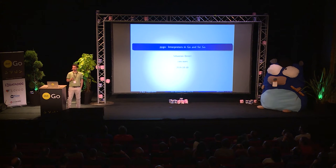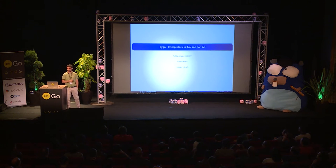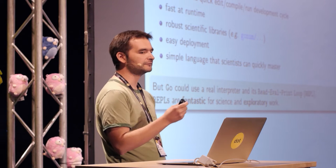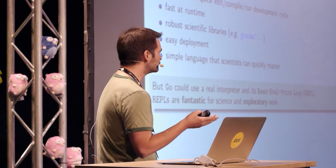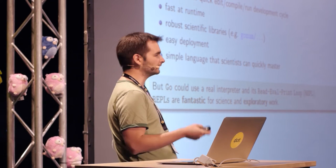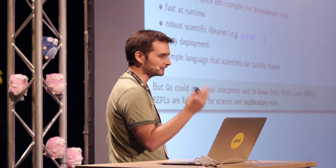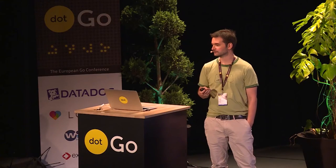Hi, today I would like to talk a bit about interpreters in Go and for Go. I come from the science and academia world, and I can tell you that Go is a very good fit for science because of the great, efficient, and quick edit-compile-run development cycle. It's also reasonably fast at runtime, and there is a set of robust scientific libraries.